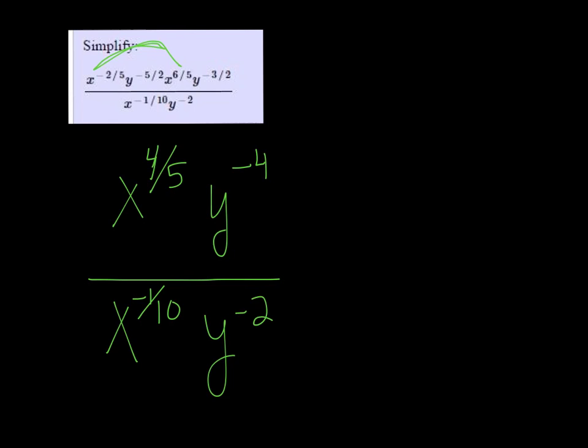So I'm going to put it in as 4 fifths plus 1 tenth in my calculator. And that is equal to x to the 9 tenths. And then negative 4 minus a negative 2 is actually negative 4 plus 2, so it's going to be y to the negative 2.